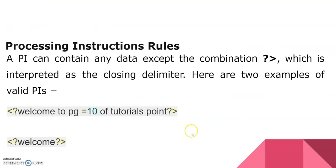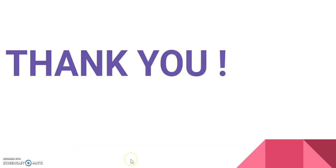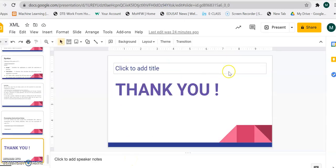There are two examples of the rules. One is the combination of question marks in the tag, and the example 'welcome to page 10 of total points' is a valid example. Another one is also a valid example. If one of the question marks is missing, then that will be an invalid example. Now we will see some examples of how exactly processing instructions work.